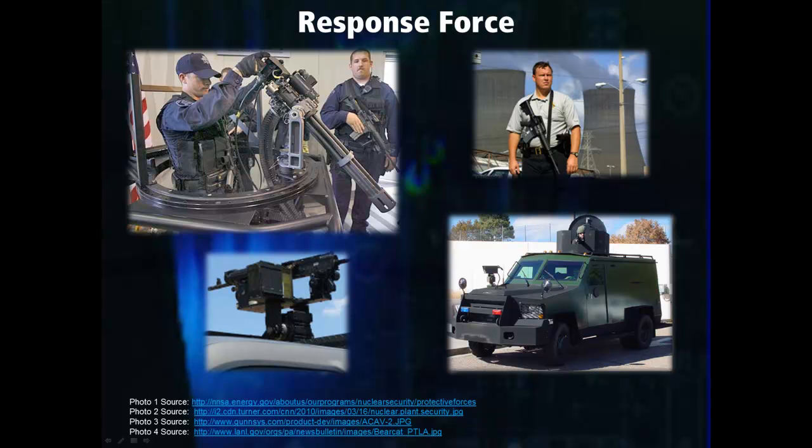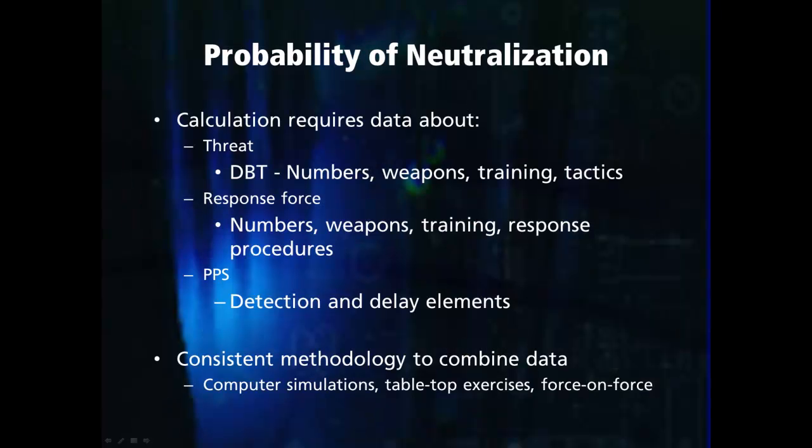More advanced equipment can include machine guns, shown with the guard on the top left, remotely operated weapons shown on the bottom left, or armored vehicles shown on the bottom right. Calculating the probability of neutralization requires data about the threat, response force, and protection system.